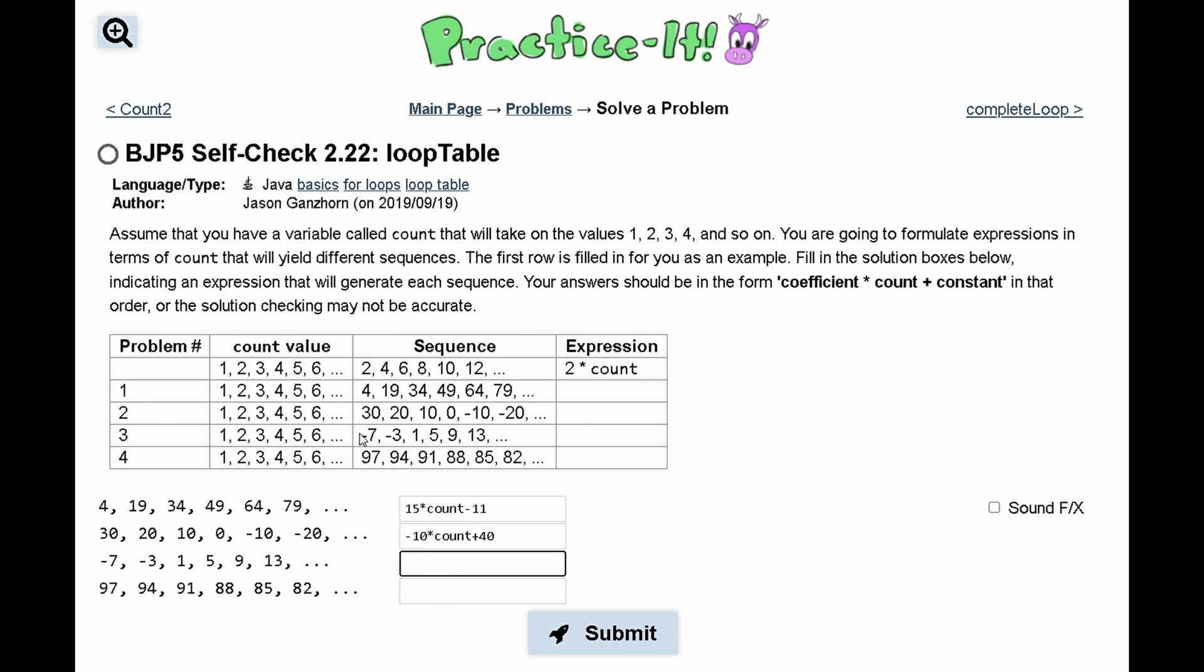For this next part, we have negative 7, then negative 3, then 1, 4, so basically we have 4. We are going to multiply this by count, and then we are going to subtract 11 to get the correct sequence.